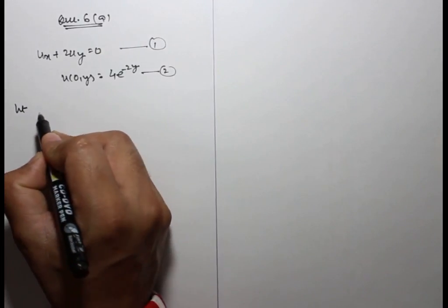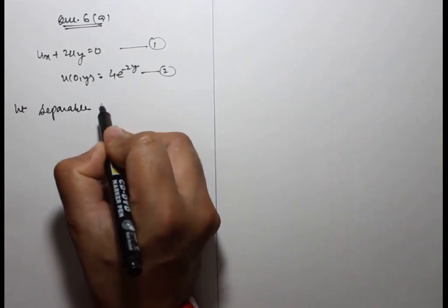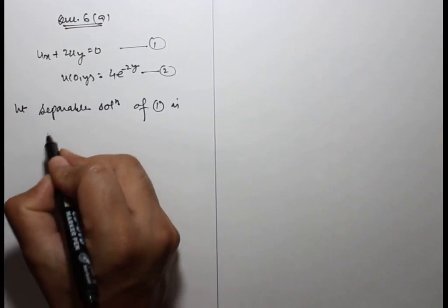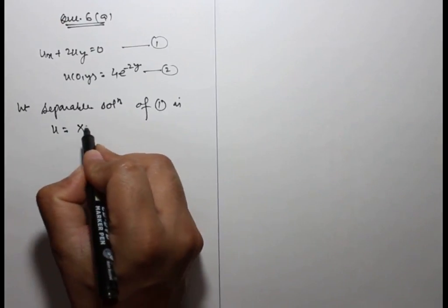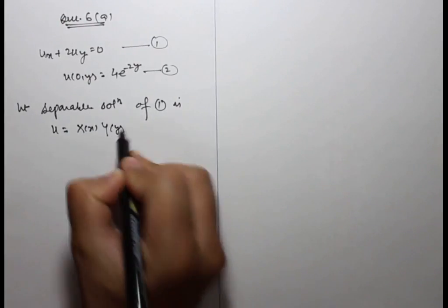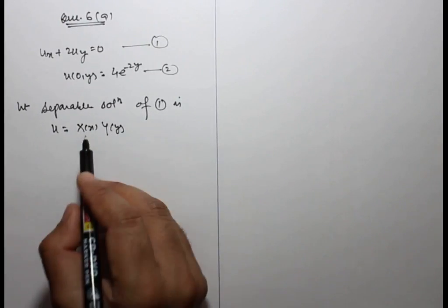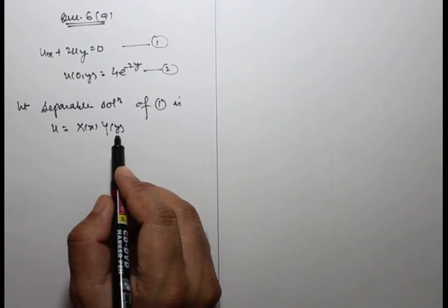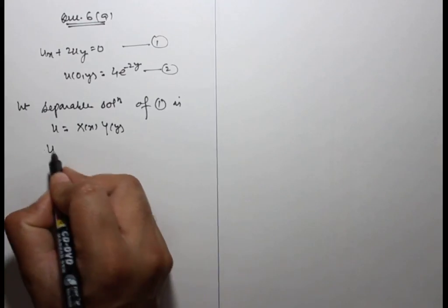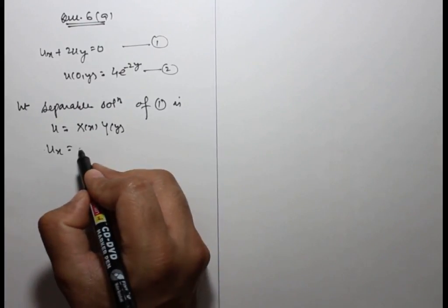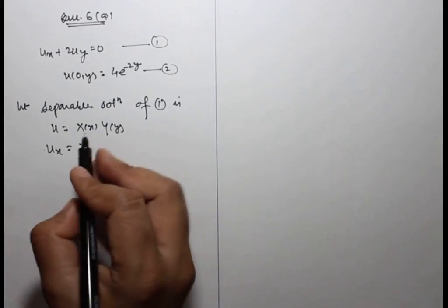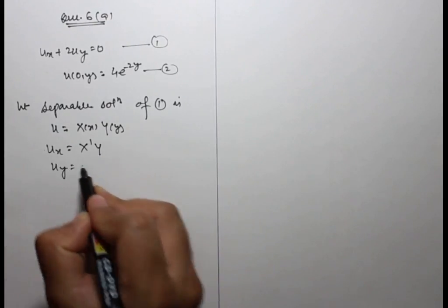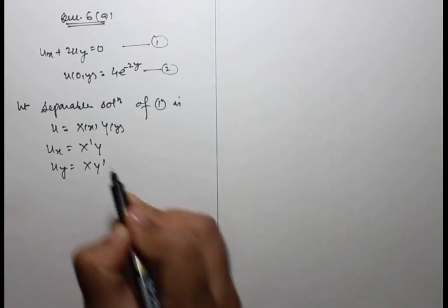Let the separable solution of equation 1 be u equals X(x) times Y(y), where X is a function of x only and Y is a function of y only. Then ux equals X'(x)·Y(y) and uy equals X(x)·Y'(y).